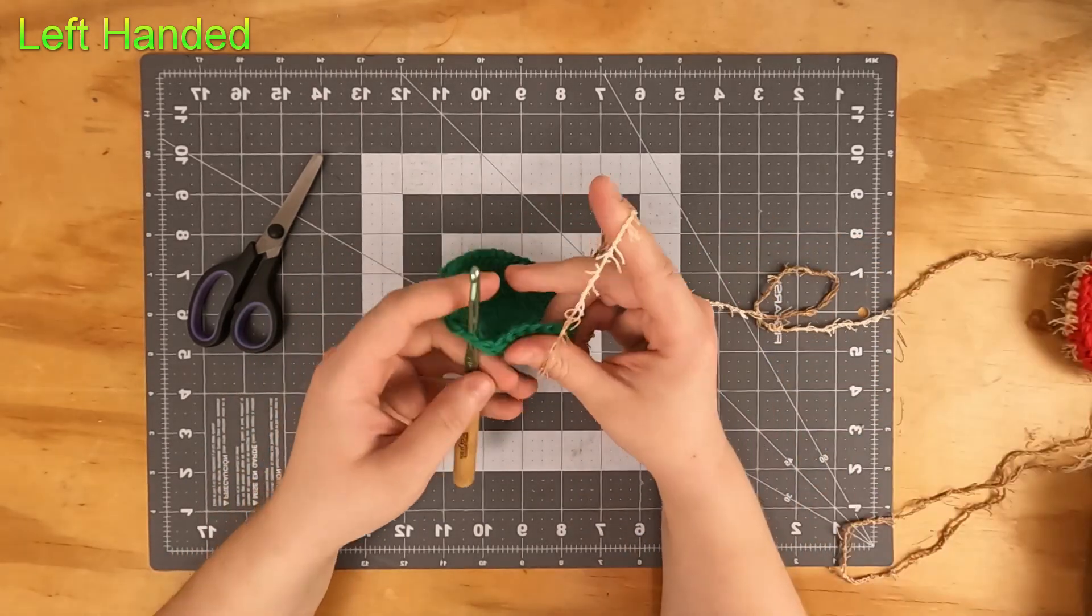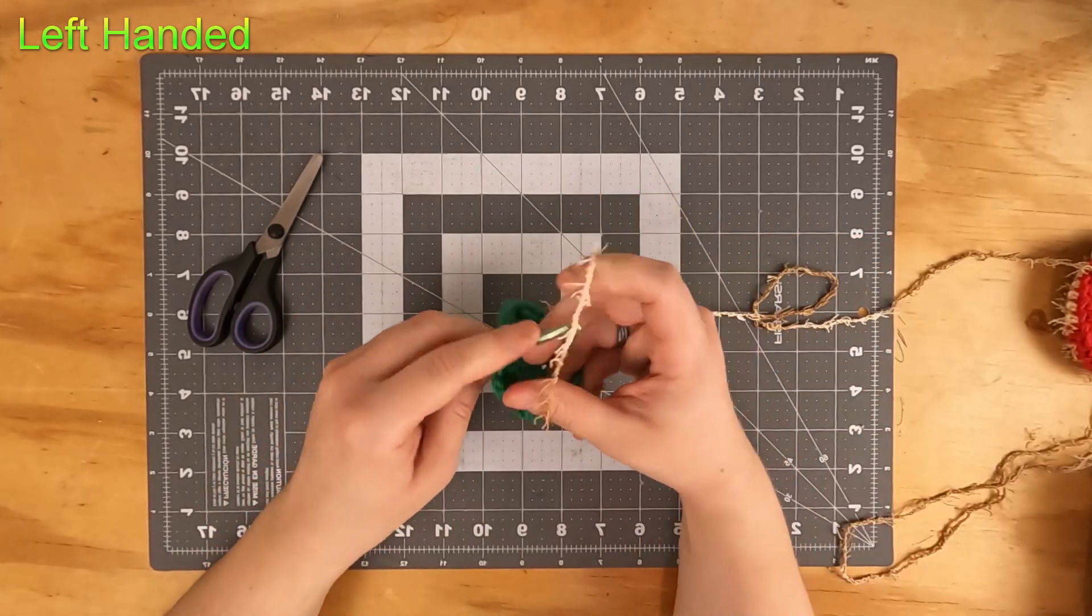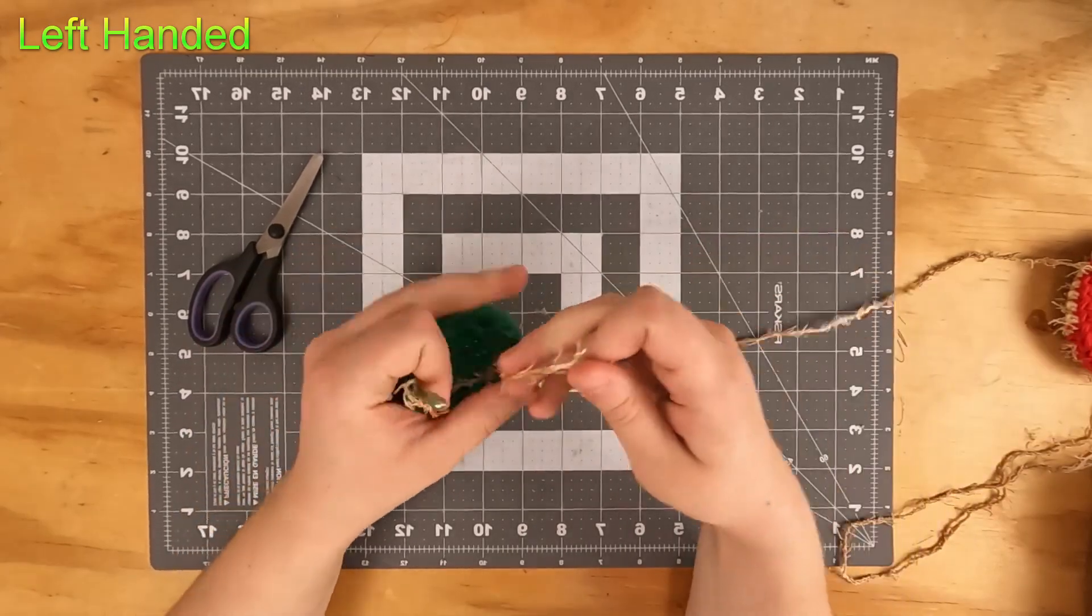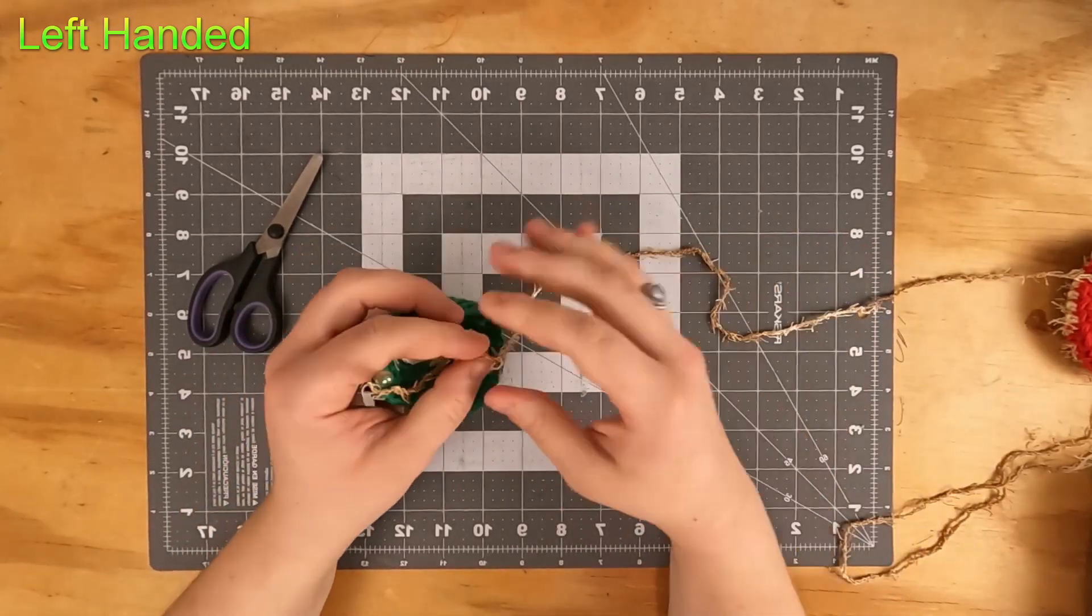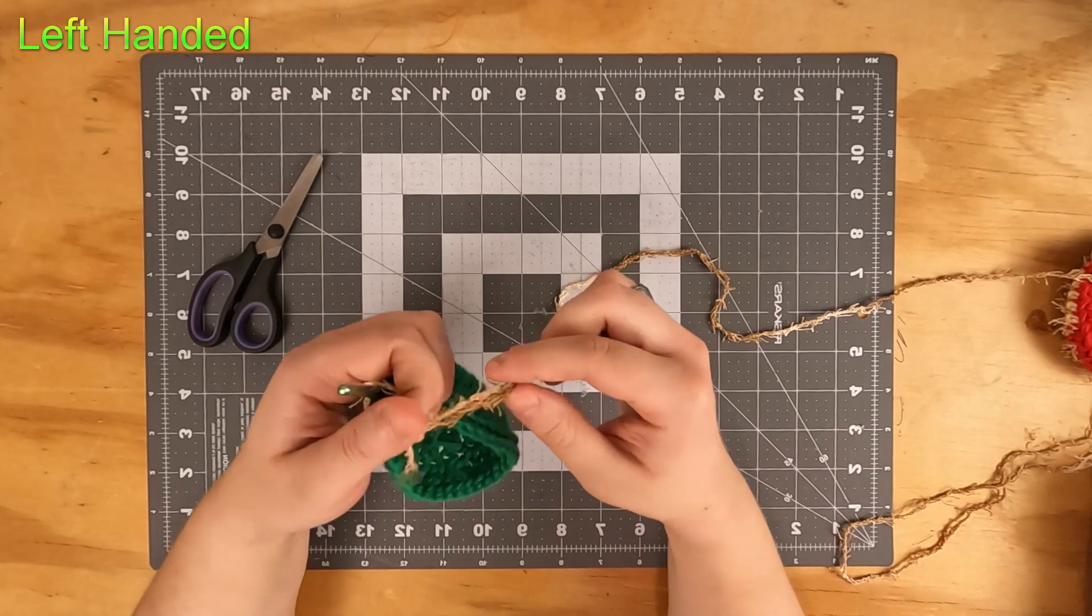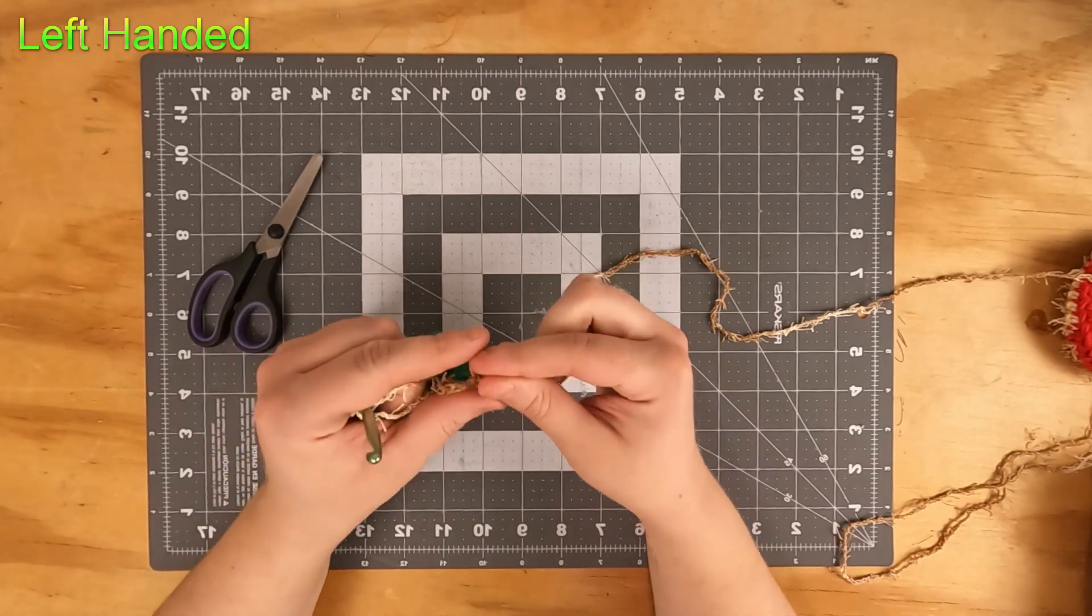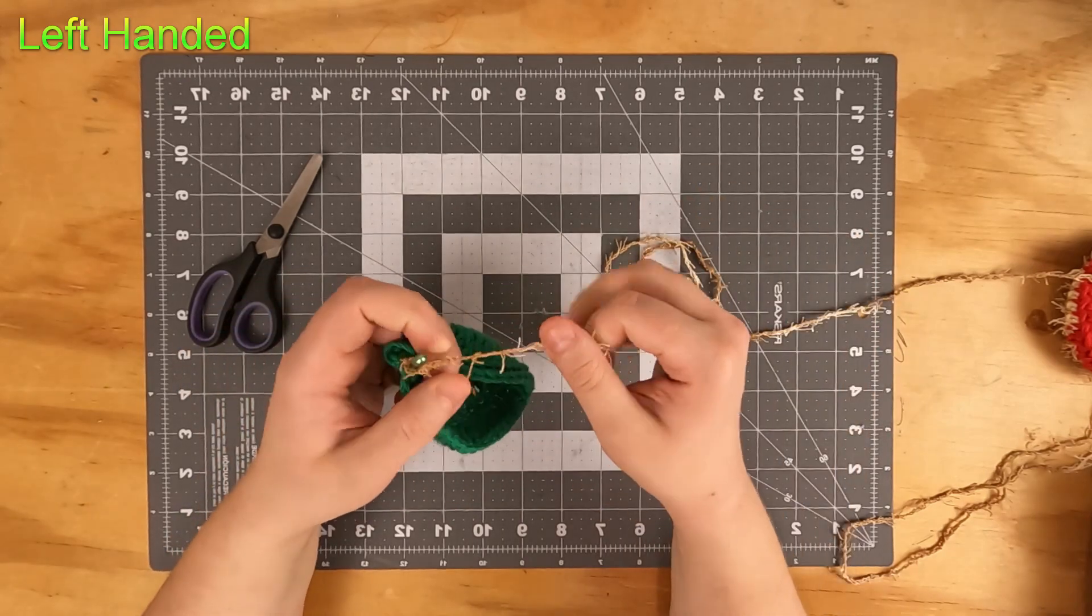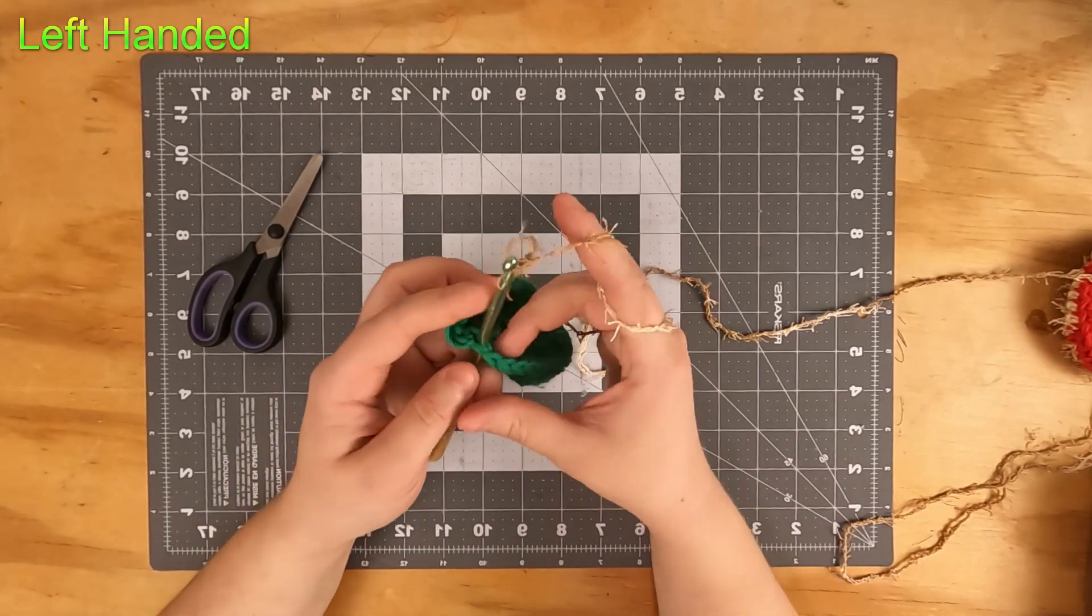So there is our scrubby yarn. I'm going to make a loop and place that over my hook. Notice the hook is already inserted and then we're placing our loop on. Something with the scrubby yarn that you will probably run into quite a bit that you don't run into with other yarns is it does like to snag on itself.